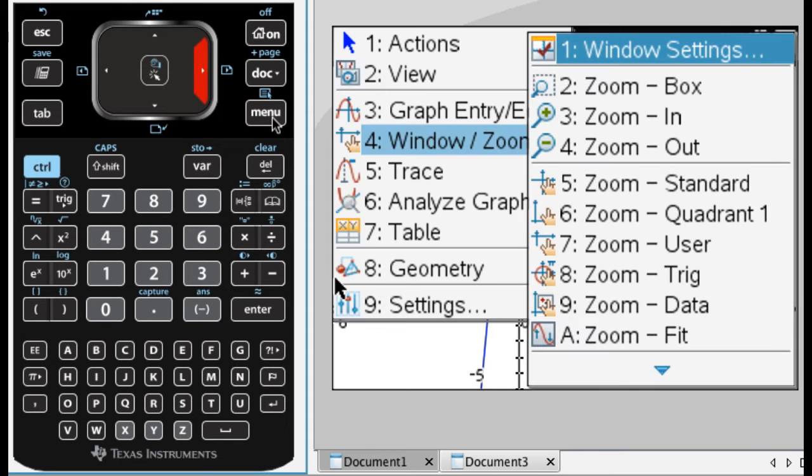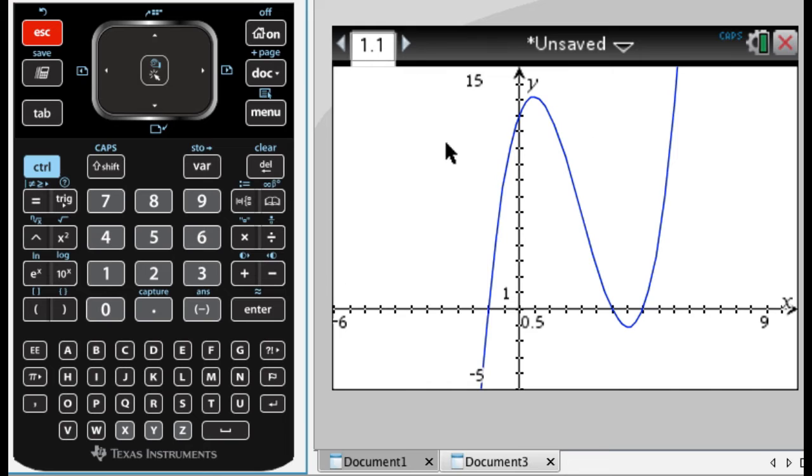So that was menu, and then window, and then option one for settings, and then you can just type it in. That's good if you're given a problem where you're given the graph, and you have to kind of mimic it on your calculator, and then figure things out. You always look at the minimum, maximum, x, and y, and then just set your calculator up exactly the same.